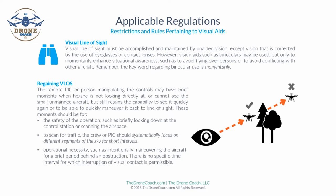To scan for traffic, the crew or remote pilot should systematically focus on different segments of the sky for short intervals. Operational necessity — such as intentionally maneuvering the aircraft briefly behind an obstruction — is acknowledged. There is no specific time interval for which interruption of visual contact is permissible; the FAA leaves it to the remote pilot in command, who is responsible for maintaining situational awareness and safety throughout the entire flight operation.